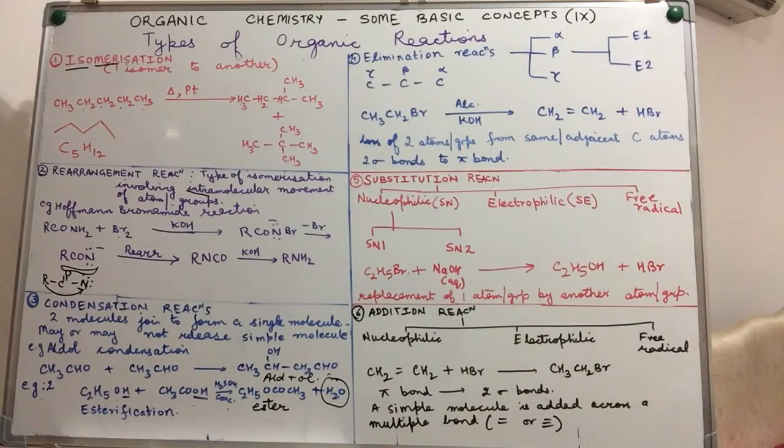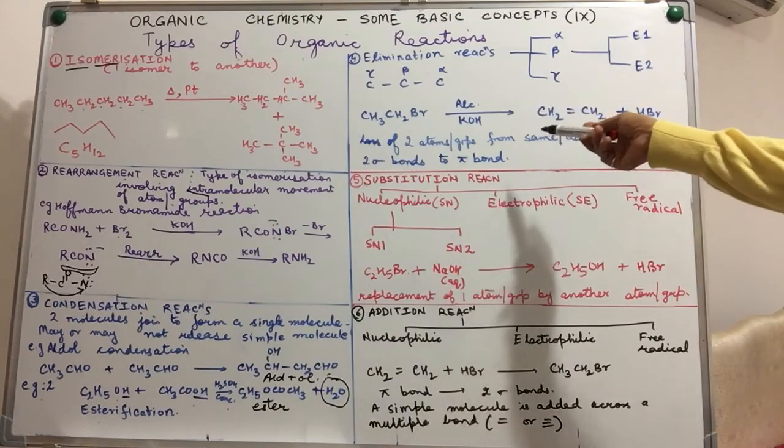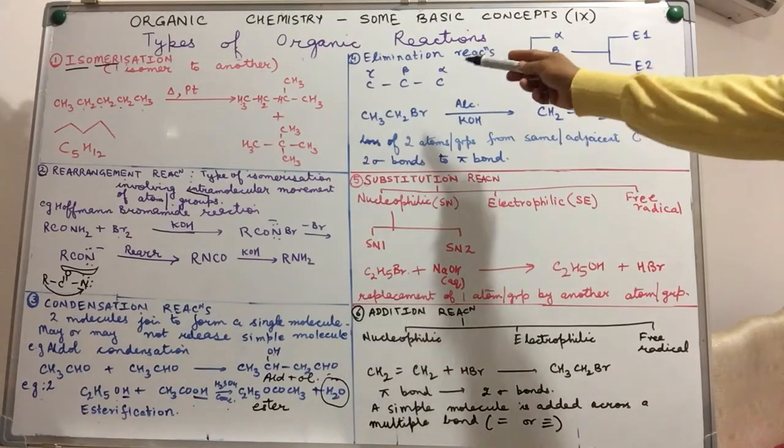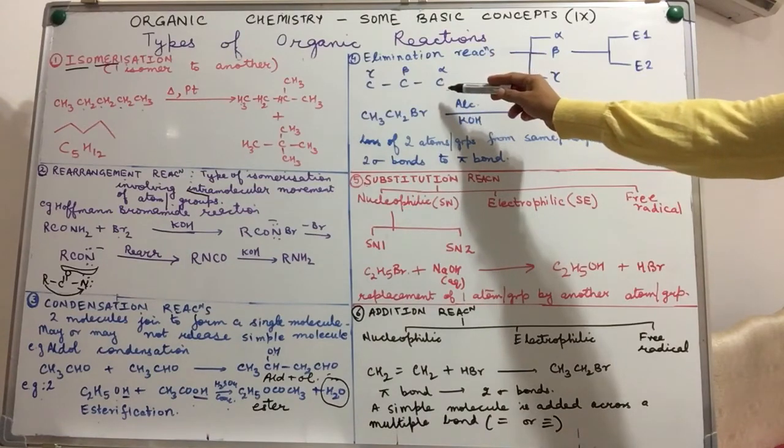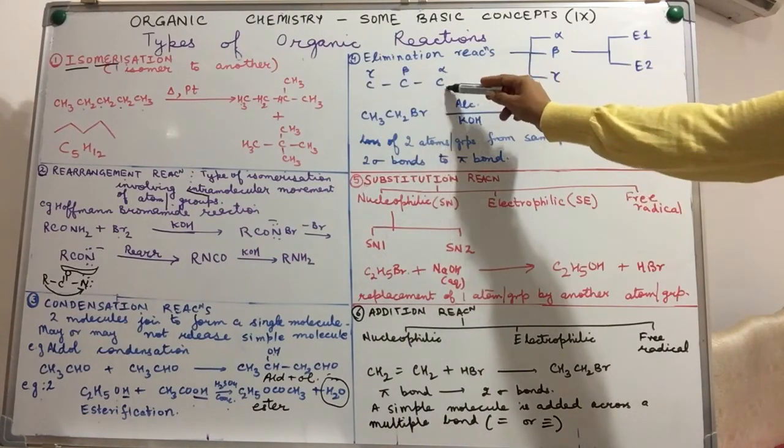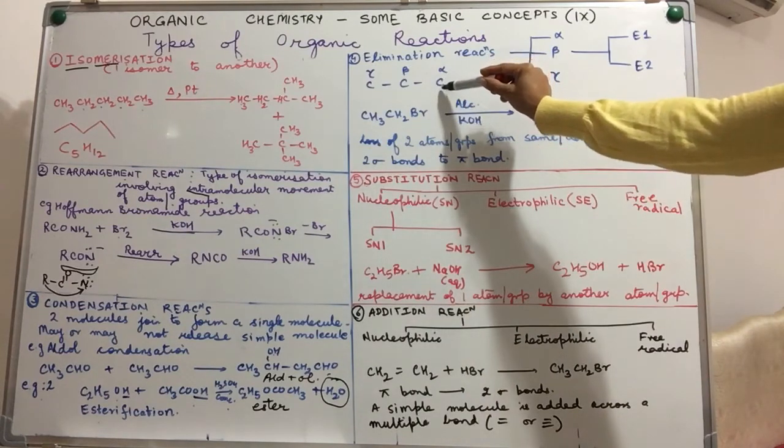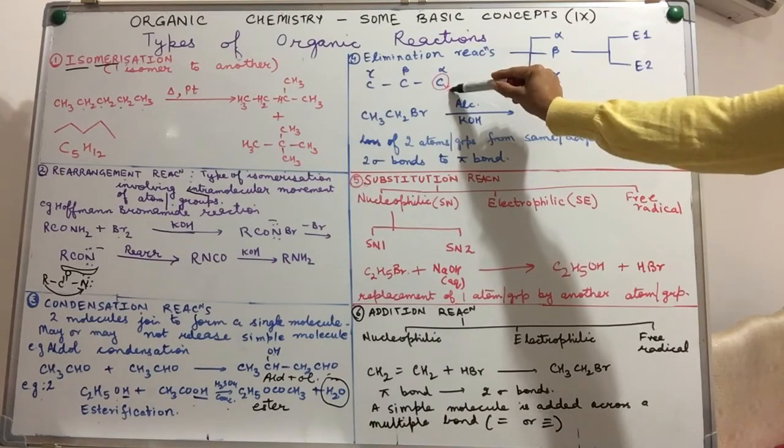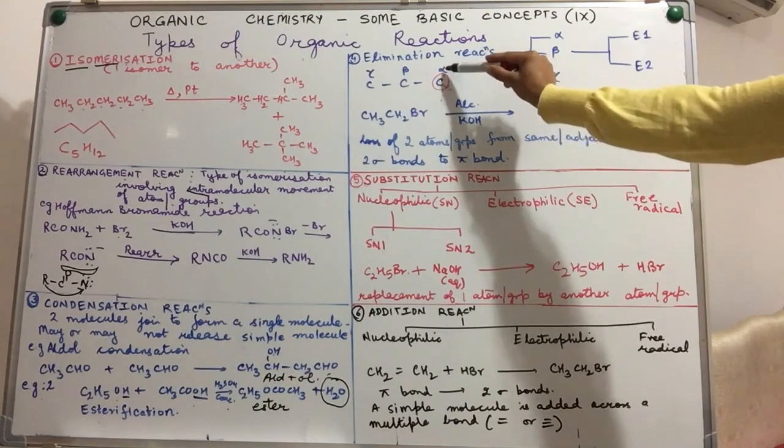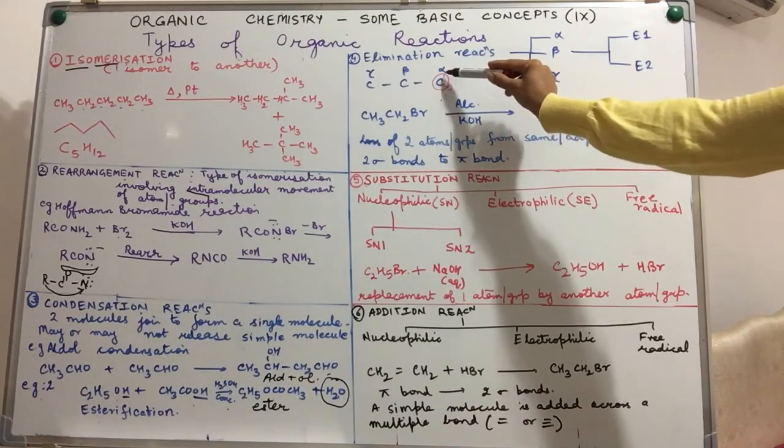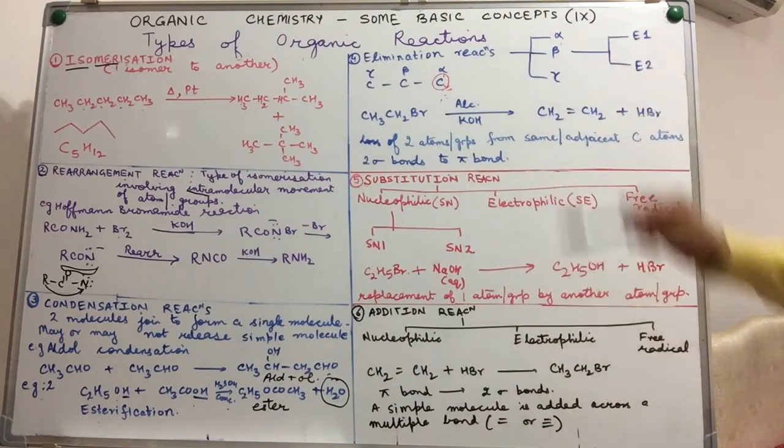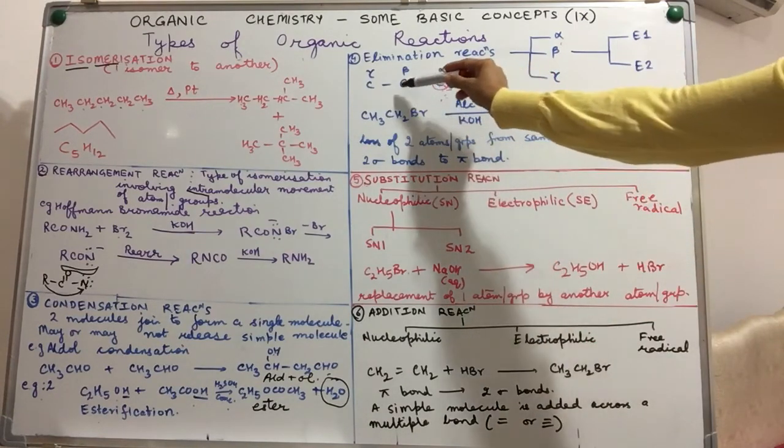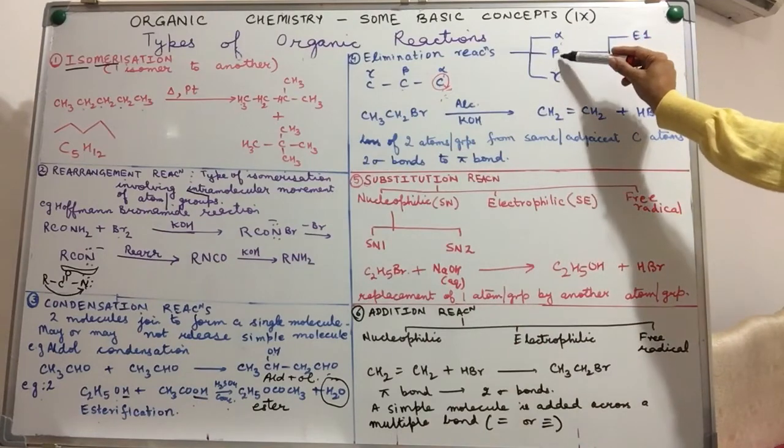Fourth category of reaction, elimination. Eliminate, remove. Wherein a simple molecule is removed. Now that simple molecule comprises of two atoms or two groups. These two atoms or groups can either be removed from the same carbon atom or two carbon atoms. Let's suppose I remove a functional group from the first carbon atom. If both the groups are removed from the first carbon atom to which the functional group is attached, we call it as alpha elimination. If on the other hand, we remove one group from alpha and the other from beta, we call it as beta elimination.